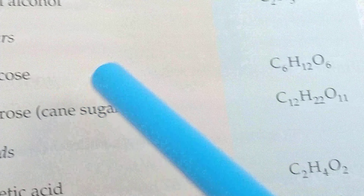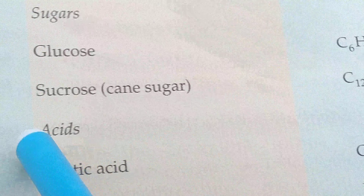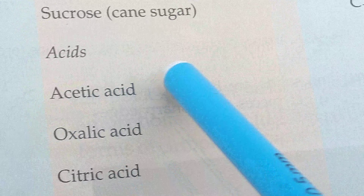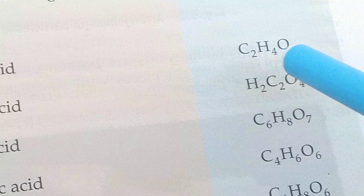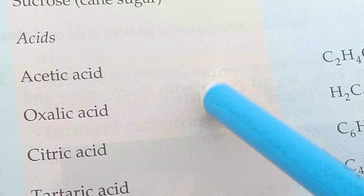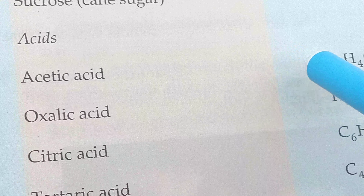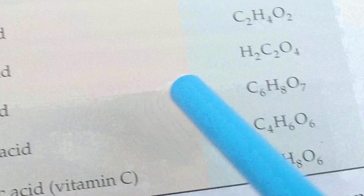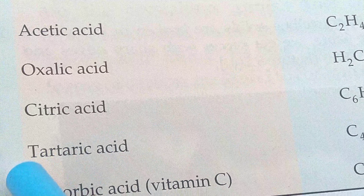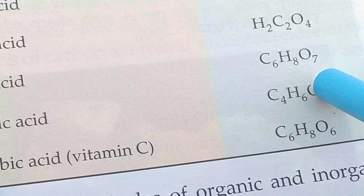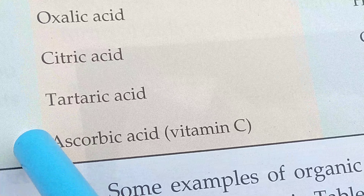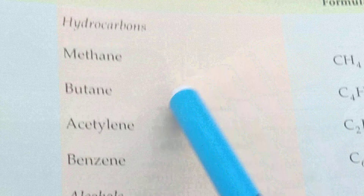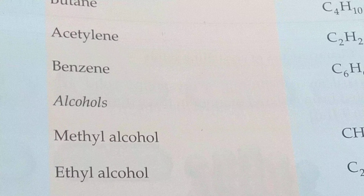Sugar: glucose is C₆H₁₂O₆ and sucrose is C₁₂H₂₂O₁₁. Acids include acetic acid (CH₃COOH), oxalic acid (H₂C₂O₄), citric acid (C₆H₈O₇), tartaric acid, and ascorbic acid. These are the organic substances which contain carbon.